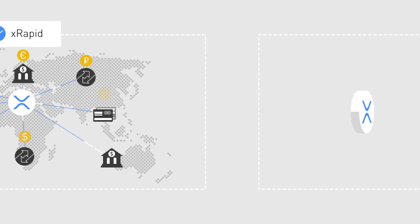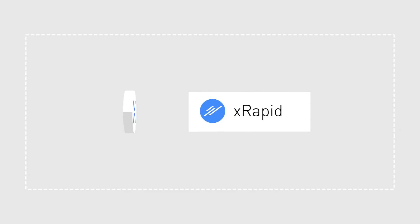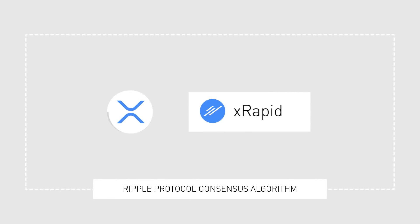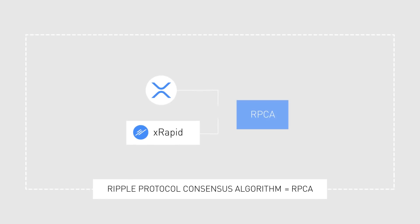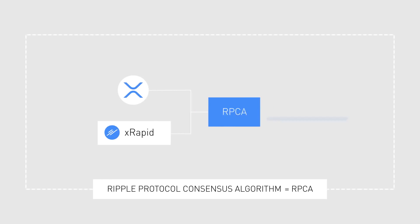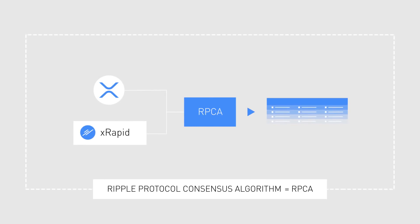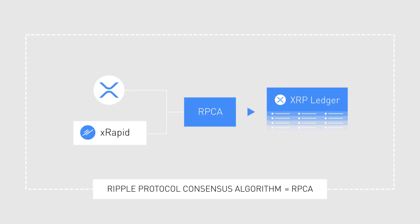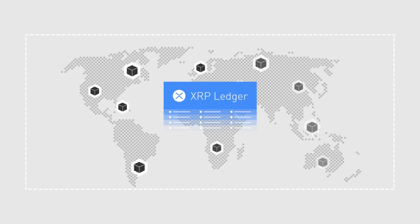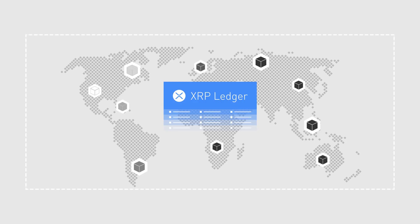XRP and XRapid rely on Ripple's patented technology called the Ripple Protocol Consensus Algorithm, or RPCA in short. All the information of Ripple accounts and XRP transactions are stored in a common shared ledger, also known as the XRP ledger. The ledger is managed by a network of independent validating nodes that constantly compare their transaction records.